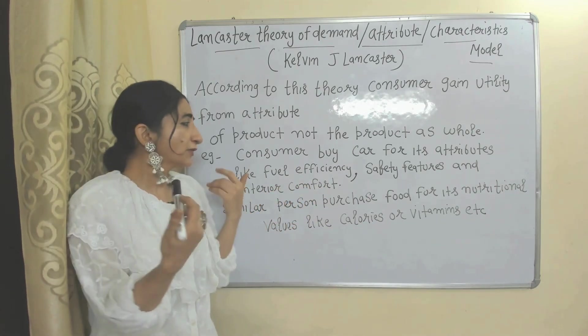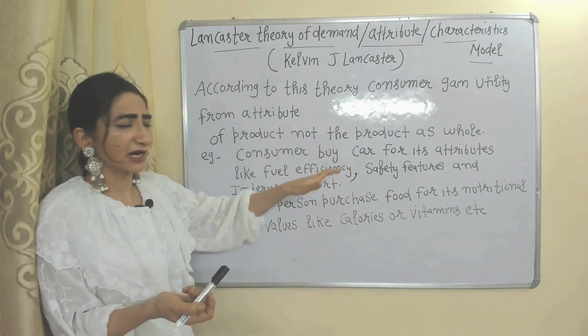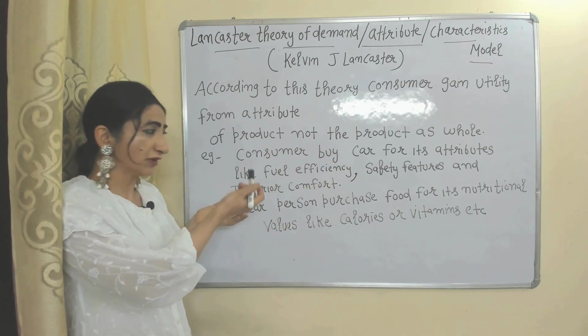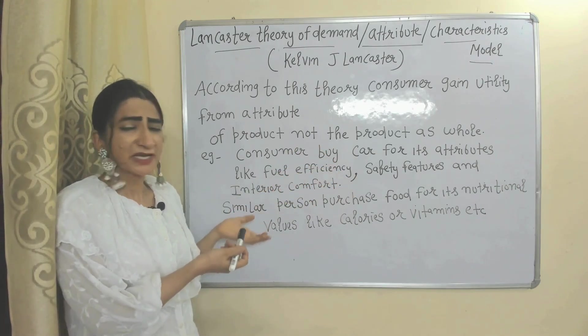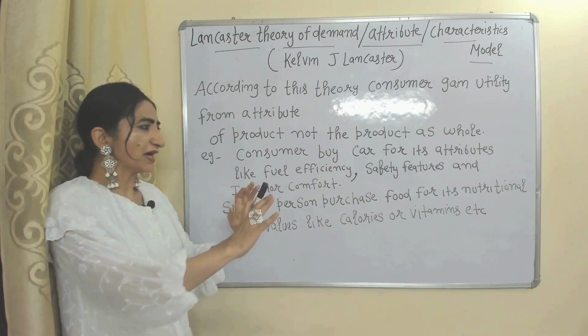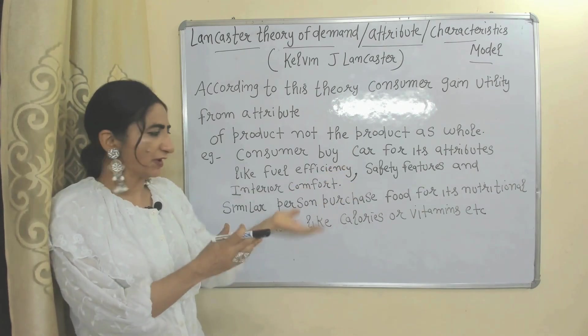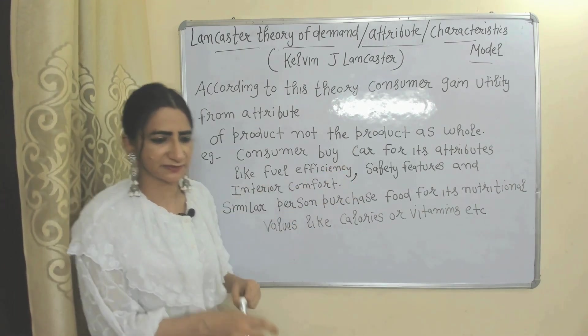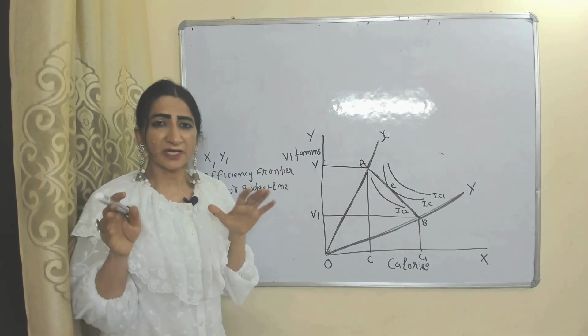For example, consumers buy a car for its attributes like fuel efficiency, safety features, and interior comfort. Similarly, consumers buy food for its nutritional value like calories and vitamins. Now we'll see a diagram.